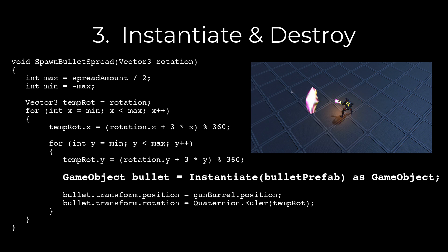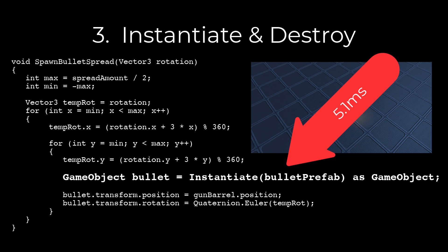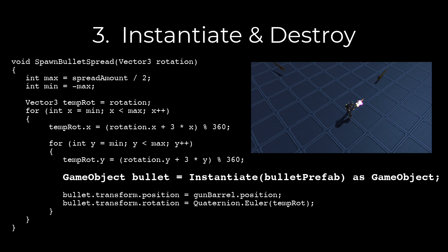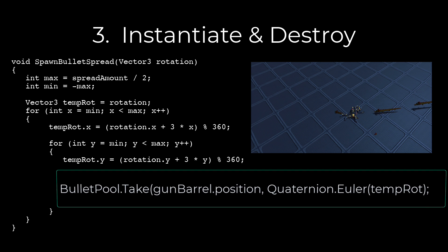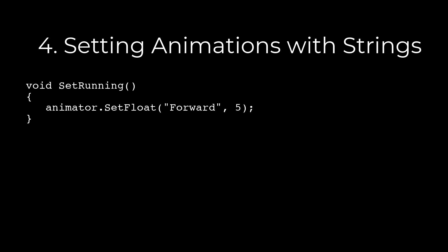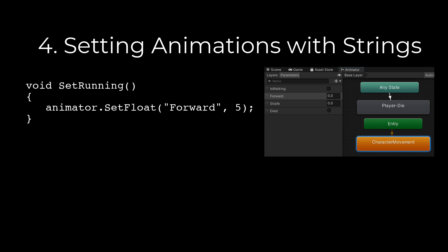It's easy to use Instantiate and Destroy when you want to create or get rid of a game object, but it's a really bad idea to do it in the main game loop if you don't have to. A better way is to use pooling — creating a whole cache of game objects right at the beginning of the game and then using them by turning them on and off as needed. This totally removes Instantiate and Destroy from gameplay, putting all instantiation at the beginning of the game where it won't interrupt play.